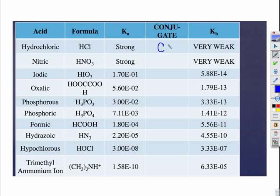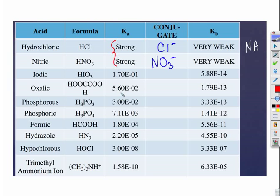Hydrochloric acid: its conjugate would be Cl⁻. HCl is one of the strong acids you're asked to memorize. In terms of being a base, Cl⁻ is very, very, very weak — we won't see any acid-base properties at all, and we wouldn't really even call it a base. The same thing is true with nitric acid, because nitrate is a conjugate of a very strong acid, and strong acids don't have equilibrium constants — there's no Ka. Strong acids and strong bases: we're dealing with stoichiometry, not equilibria, so nitrate has no base properties to speak of.